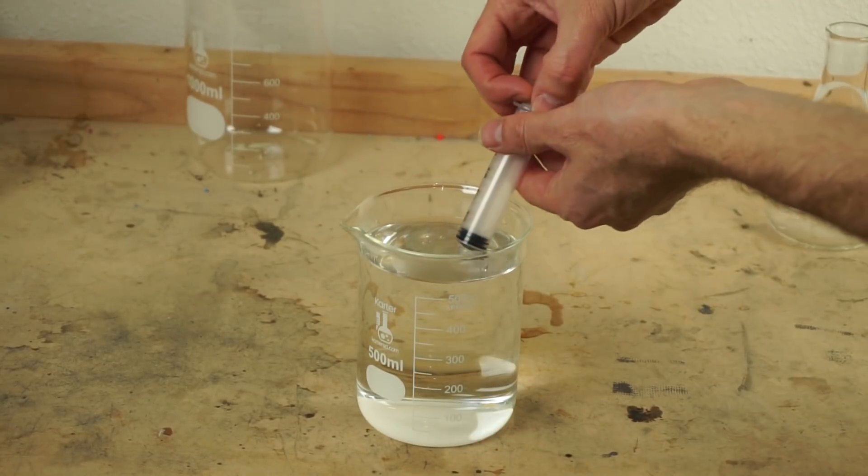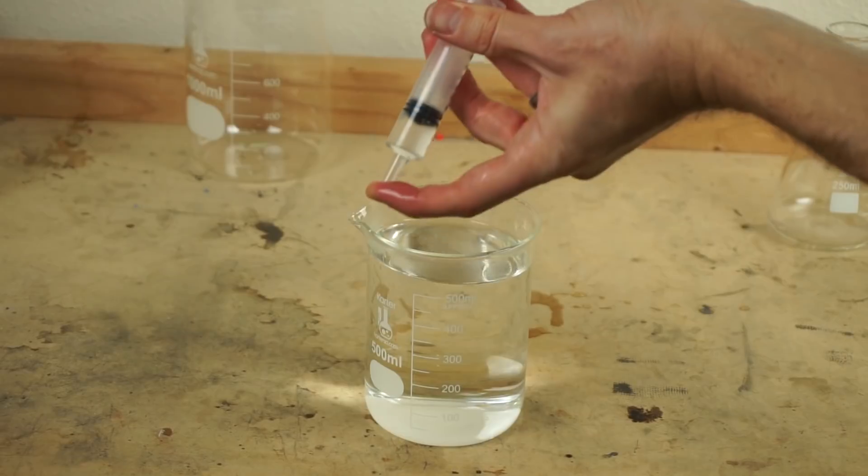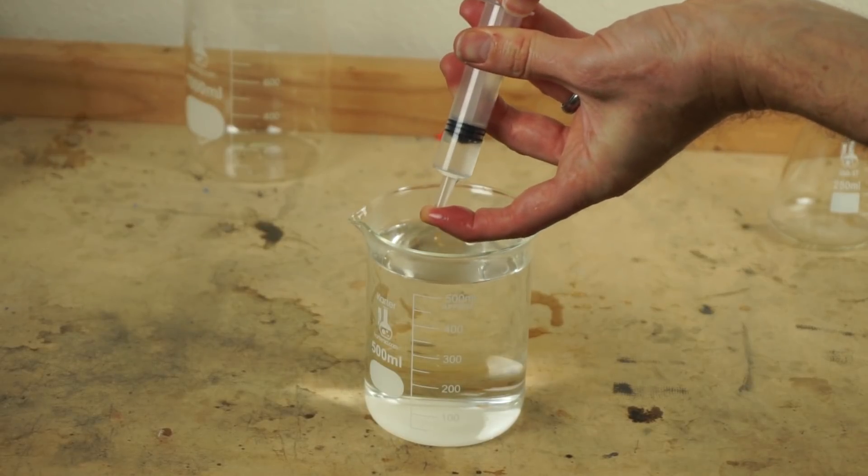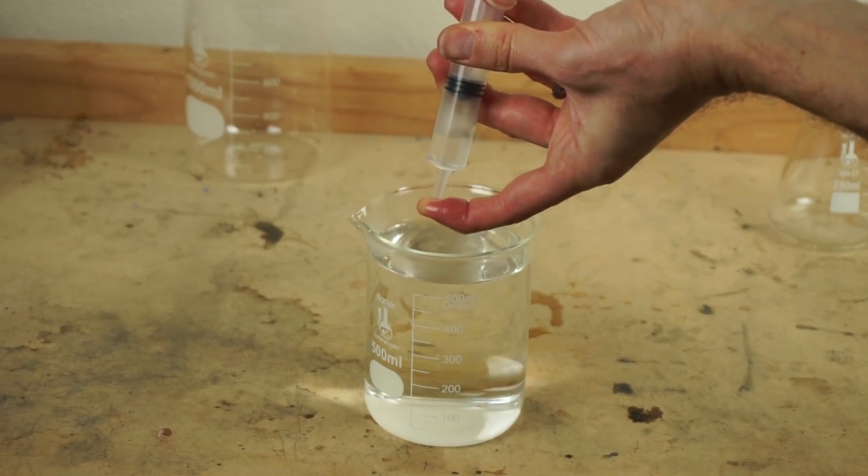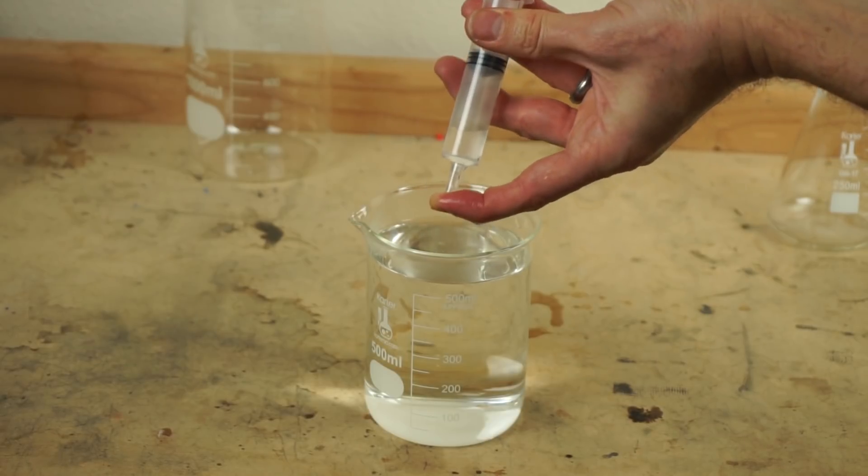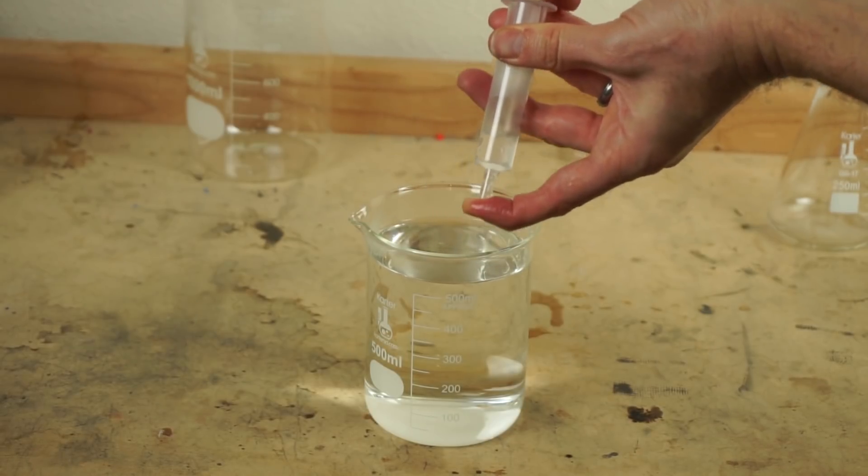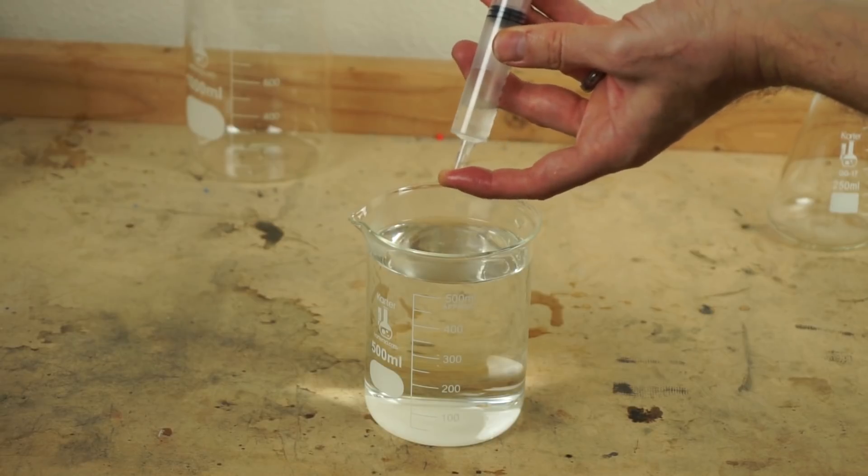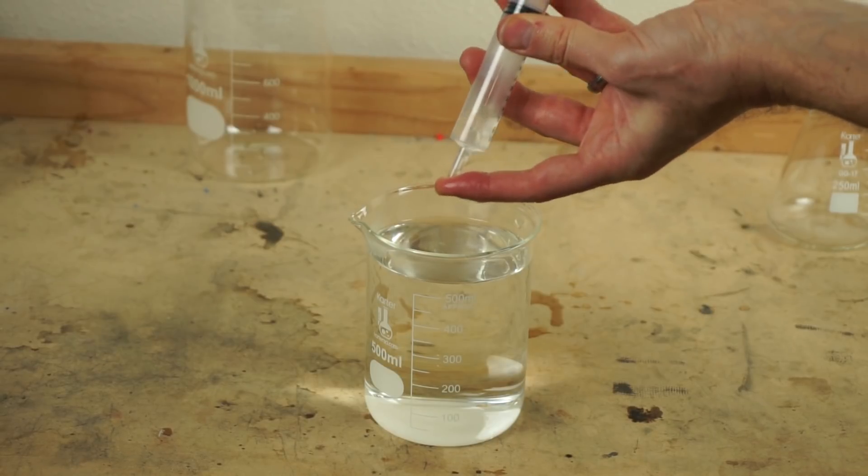So you can also see cavitation when you try to suck up something too fast through a syringe. See, as I reduce the pressure by pulling it up, it just boils the water in there and it can't keep the same suction. So that's how I'm able to increase the volume because the water just keeps boiling.